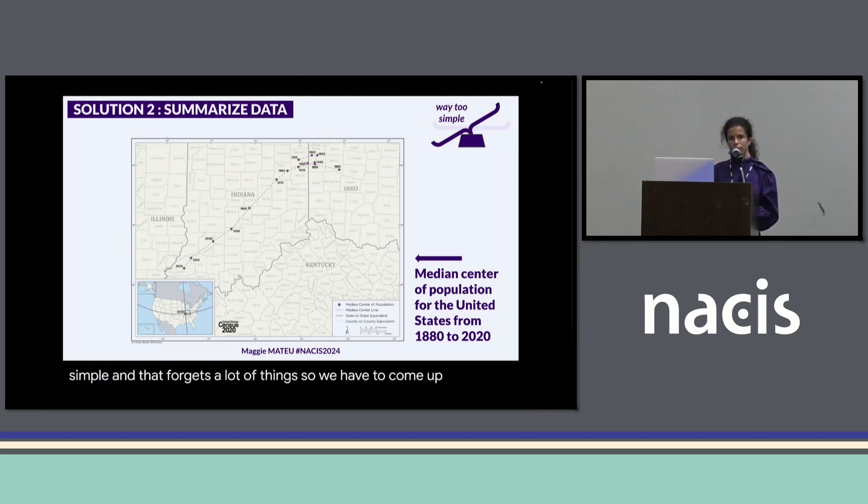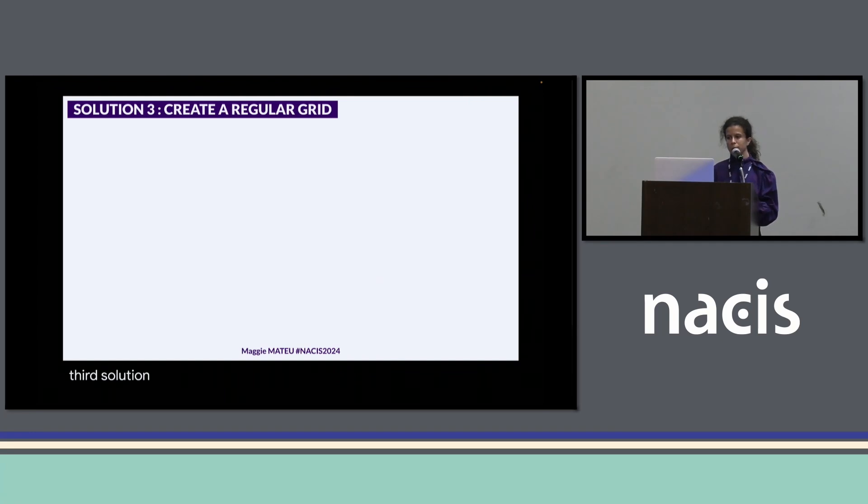The third solution would be to create a regular grid. This solution is an intermediate solution, a compromise, because we retain the advantages of aggregation that we talked about, the fact that it's being simplified, it's intelligible information, it's kind of anonymous, but now we are doing it based on a regular grid made with mathematical solutions rather than political intentions.